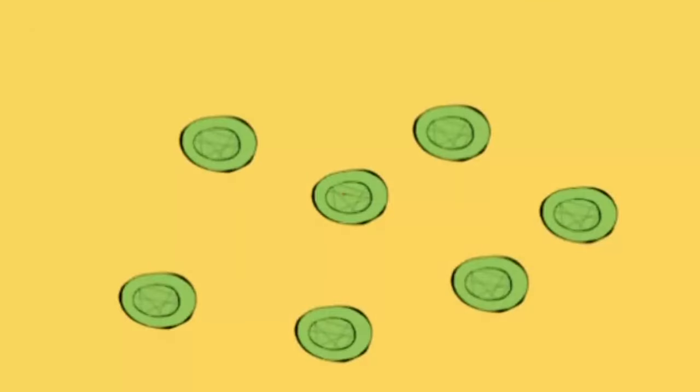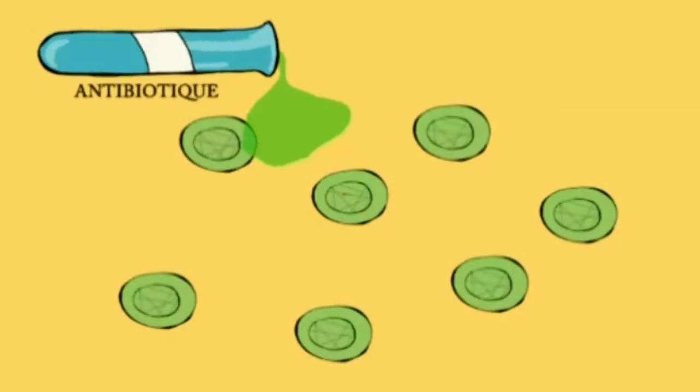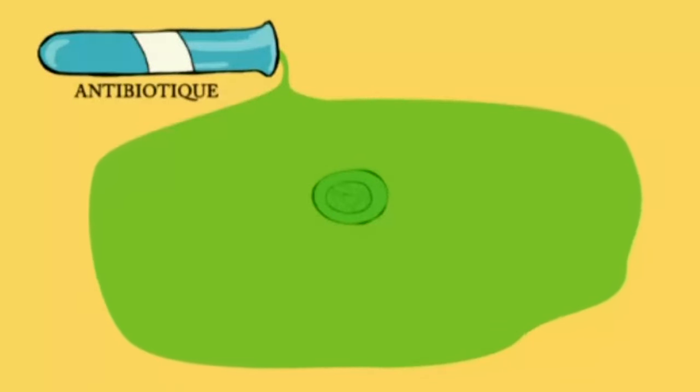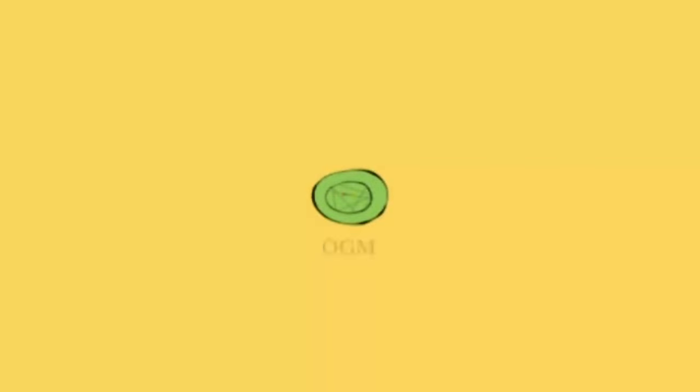Pour savoir si l'opération a réussi, on verse de l'antibiotique dessus. Rappelez-vous, le transgène contient un gène de résistance aux antibiotiques. Donc, si une cellule de maïs survit, c'est que la modification transgénique a réussi. Cette cellule de maïs contient donc bel et bien le gène de la bactérie Bt.